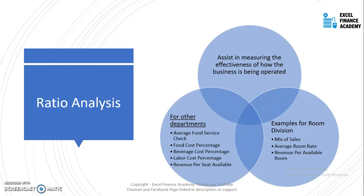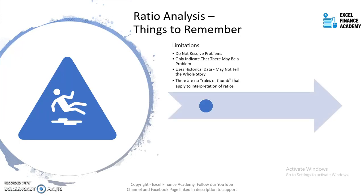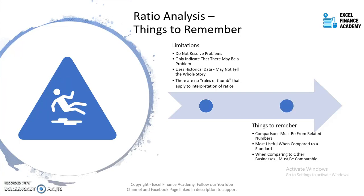For any kind of ratio analysis, vertical analysis, or horizontal analysis, there are certain things to remember. First, they don't resolve any problem — they just indicate what the problem can be. They use historical data, and there is no rule of thumb to interpret the ratio or the results. When comparing two or more results, you must compare them to a standard, and they are most useful when compared to a standard or to somebody else. When comparing businesses, they must be common size, in the same operating environment, and same risk environment, because different operating environments pose different challenges and different expense and revenue opportunities.